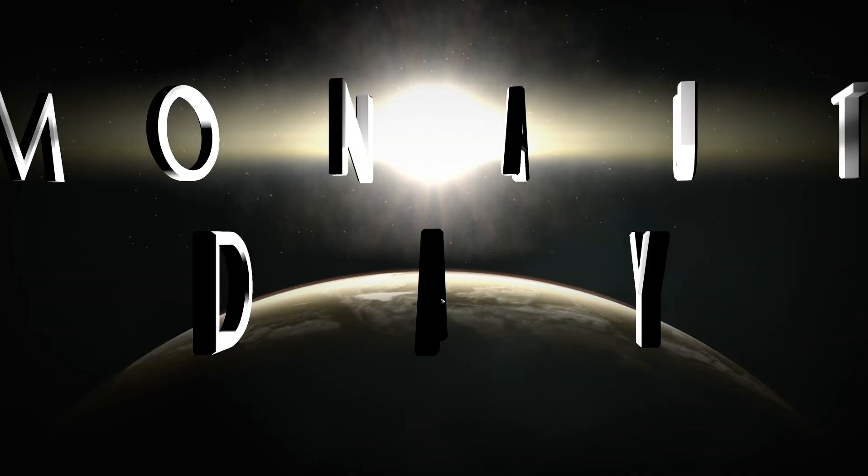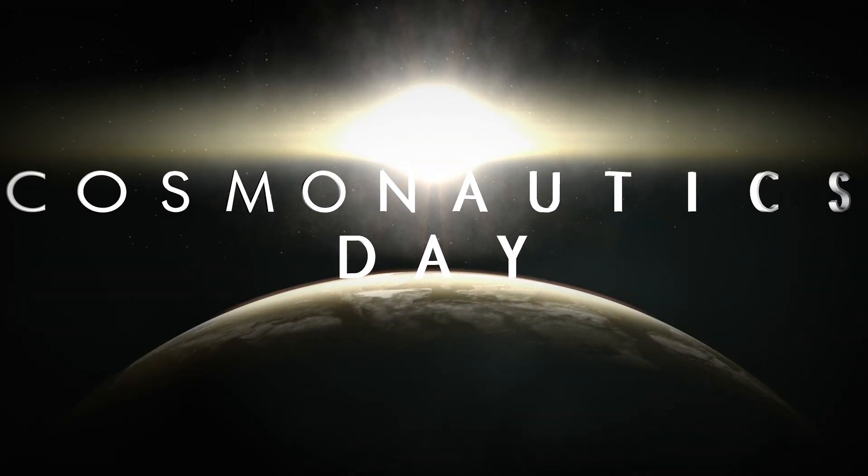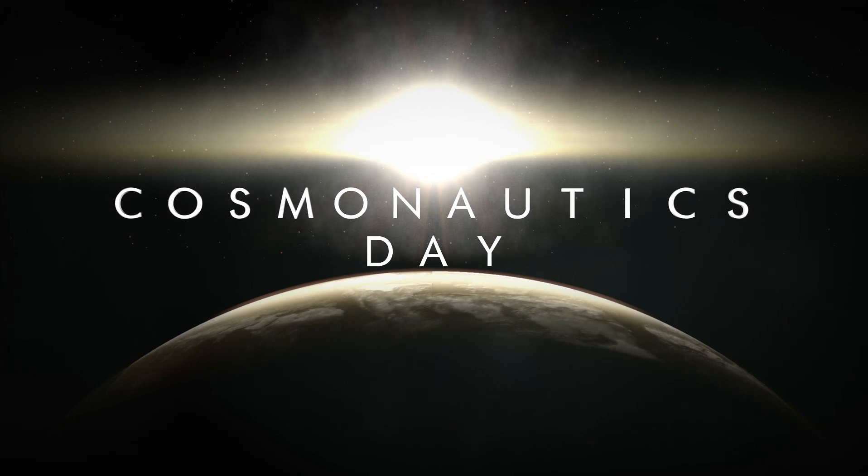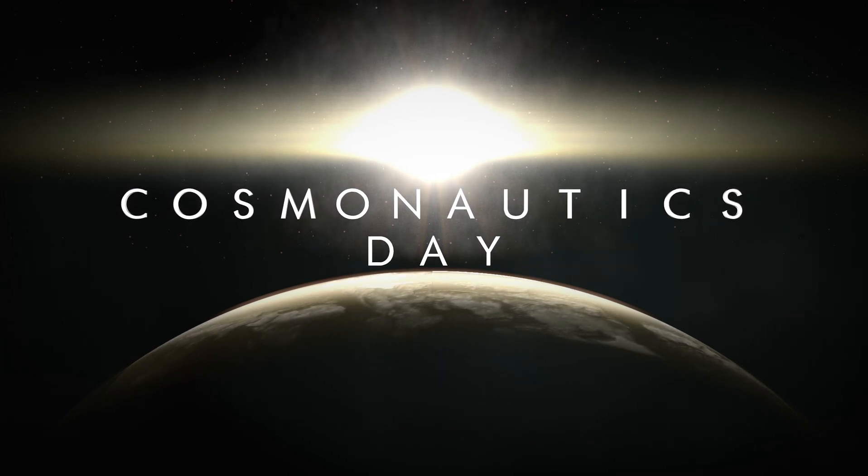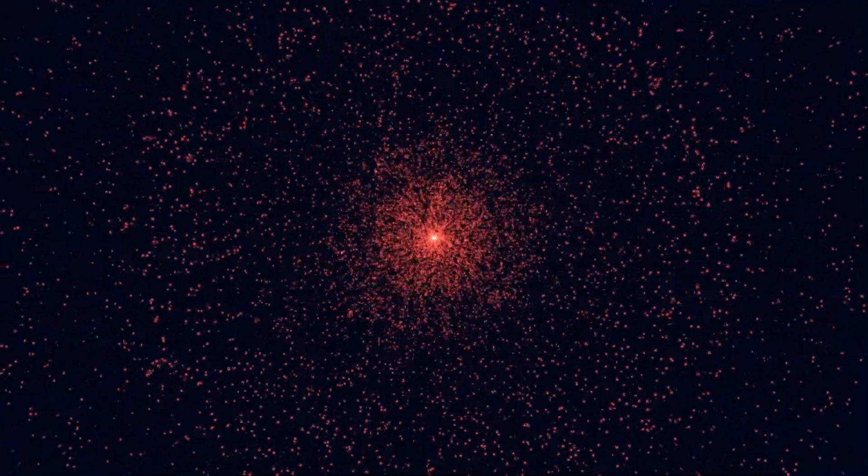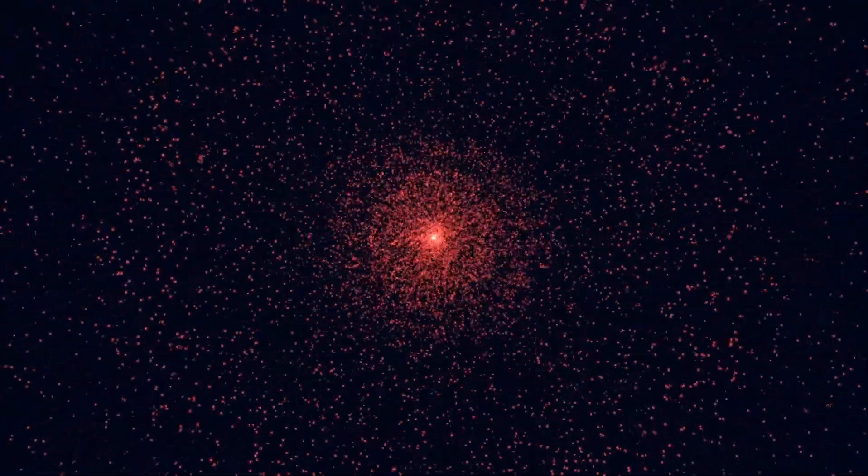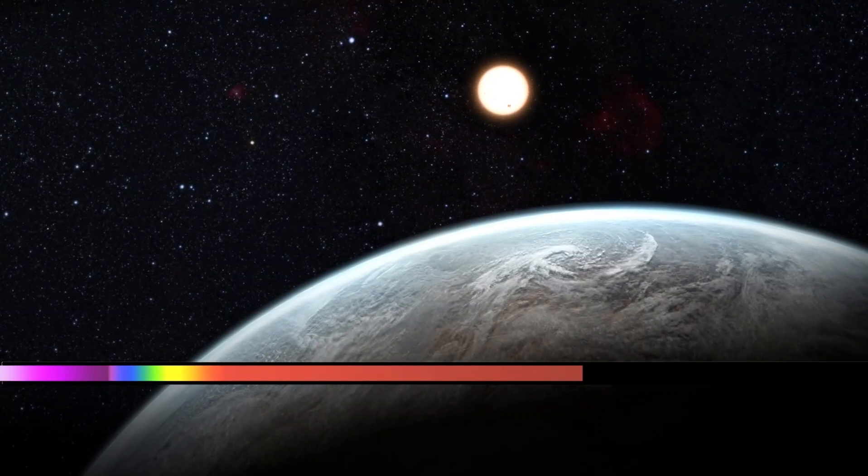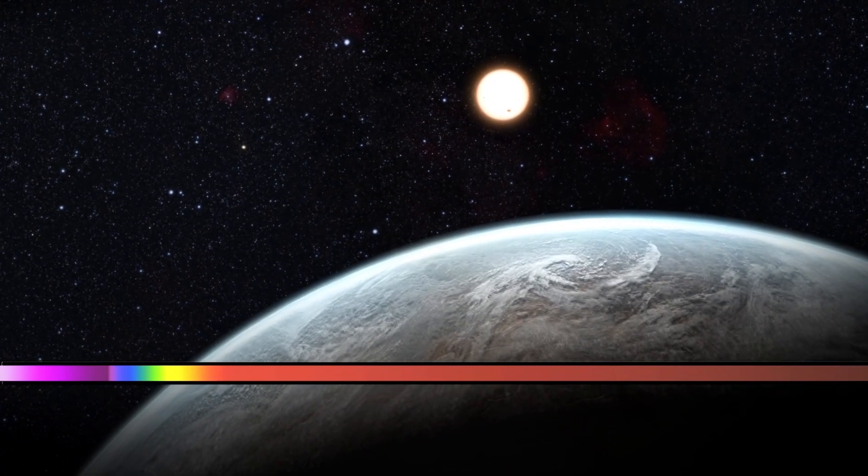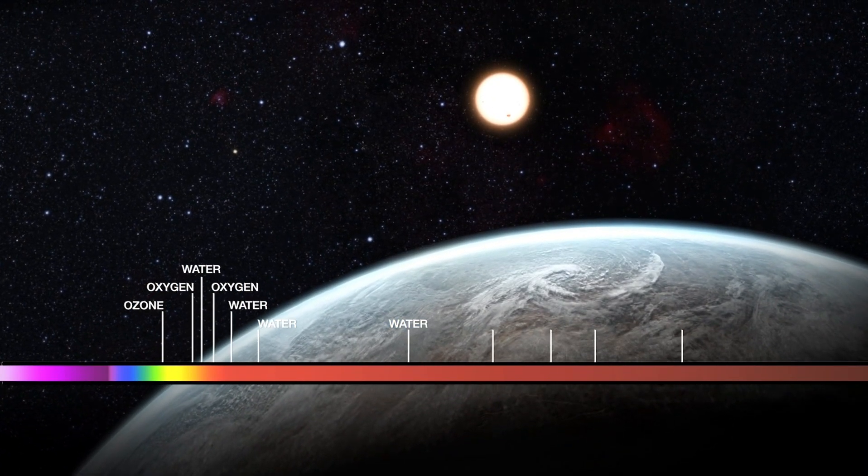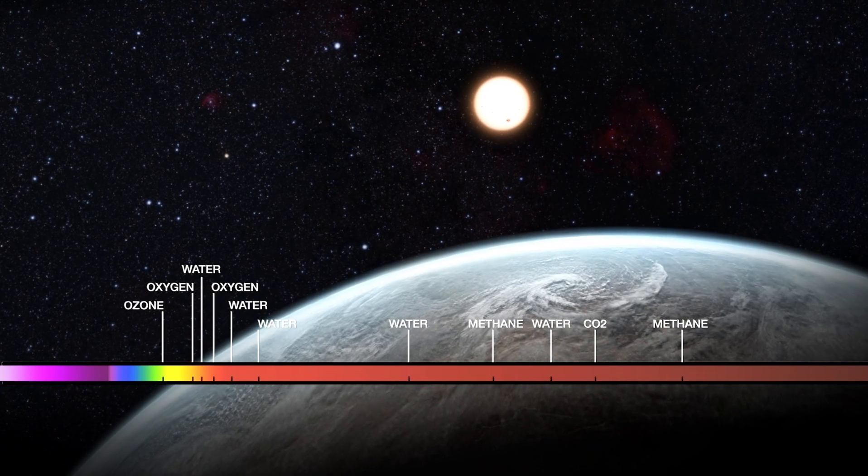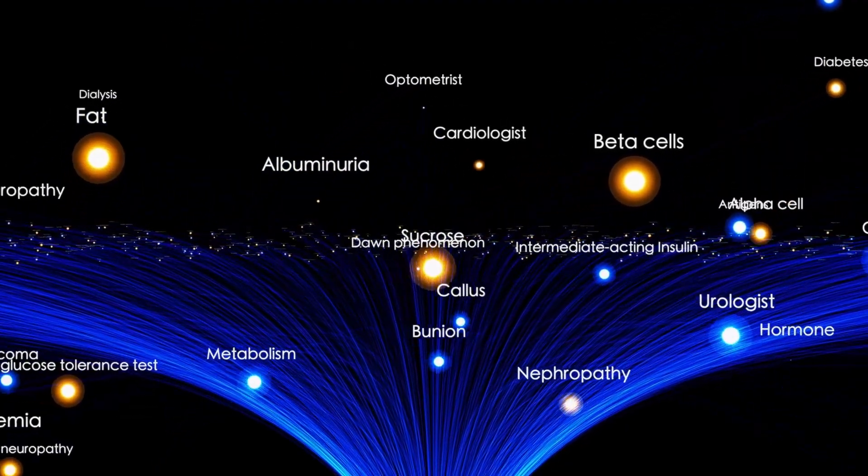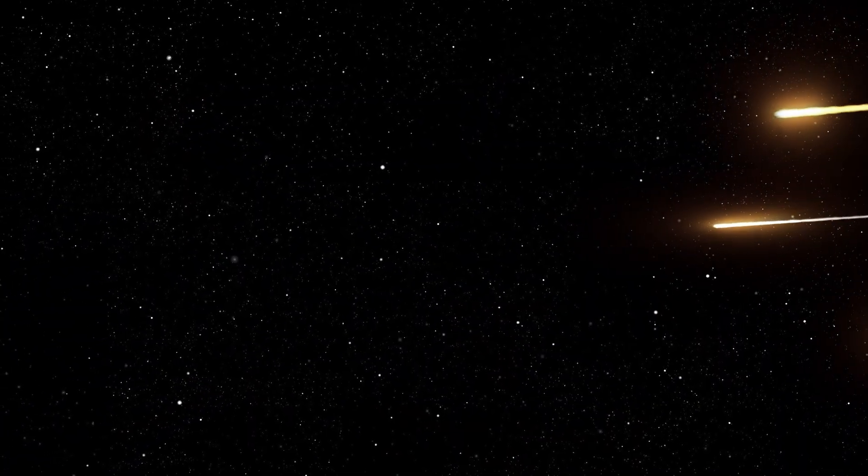Now let's turn our attention to Proxima Centauri, also known as Alpha Centauri c. This red dwarf, or M type star, is located 0.21 light years away from the other two stars, which is approximately 13,000 times the distance between Earth and the Sun. And get this, it is technically the nearest star to us. In fact, Proxima Centauri translates to the nearest star of Centaurus in Latin, and was discovered in 1915 by Scottish astronomer Robert Thorburn Ayton Innes.